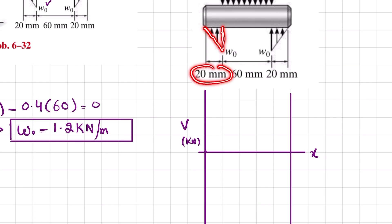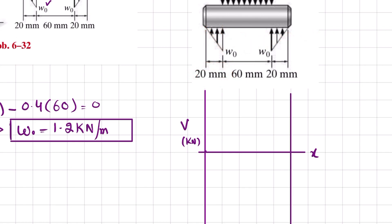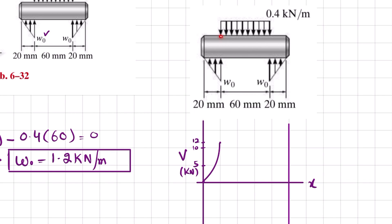The uniformly increasing load acts over the first 20 millimeters (0.02 m), giving a resultant of (1/2) × w-naught × 0.02 = 12 newtons. Since this is an increasing distributed load, the shear force is second degree and the curve is counterclockwise, reaching a value of 12 at the end of this region. We then have the distributed load from bar C acting from this point onward.